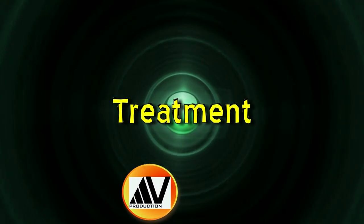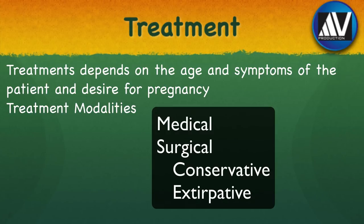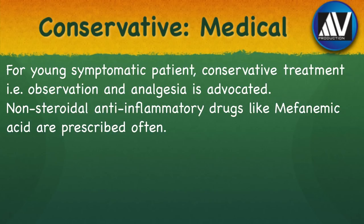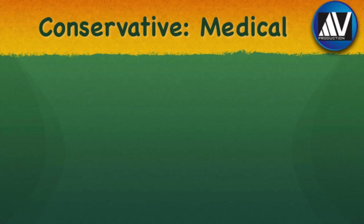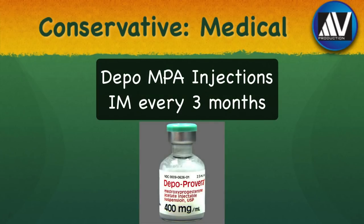I will now discuss the treatment of adenomyosis. If a clinical diagnosis is made, treatment depends on the age and symptoms of the patient and whether a pregnancy is desired. Various modalities of treatment are medical and surgical. Surgical treatment can be conservative or extirpative. For a young symptomatic patient, conservative treatment — that is observation and analgesia — is advocated. Nonsteroidal anti-inflammatory drugs like mefenamic acid are prescribed often. Another strategy to reduce both pain and bleeding is to reduce menstrual bleeding with cyclical progestins, oral contraceptive pills, or depot medroxyprogesterone acetate injections every 3 months.